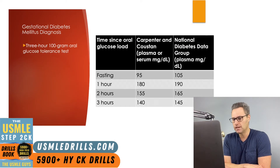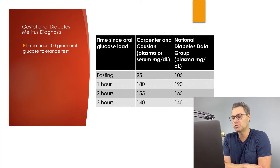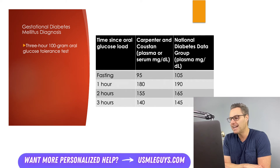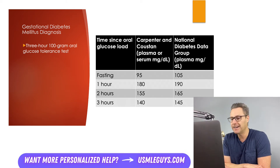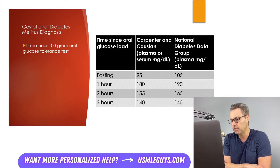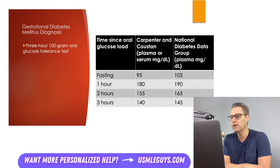There are two different groups with slightly different cutoff points. Using the Carpenter and Cousteau criteria increases the number of women diagnosed with gestational diabetes, but the data hasn't confirmed whether treating these milder cases actually improves outcomes. For now, both the more stringent Carpenter and Cousteau criteria and the less stringent National Diabetes Data Group values are used. If a patient has two or more abnormalities at the fasting, one-hour, two-hour, or three-hour time points, they are diagnosed with gestational diabetes.